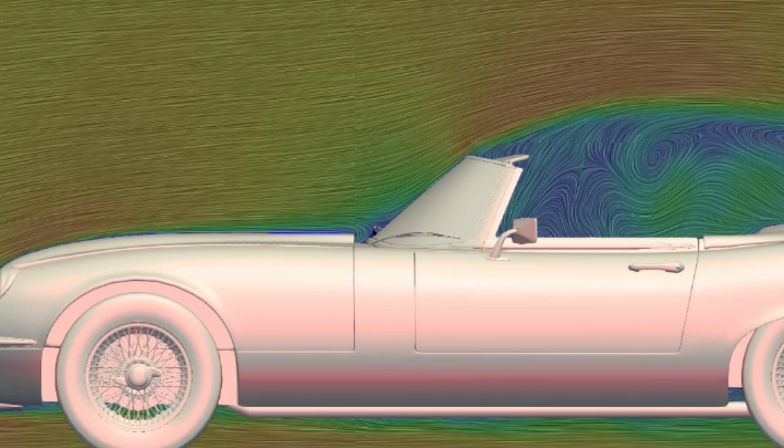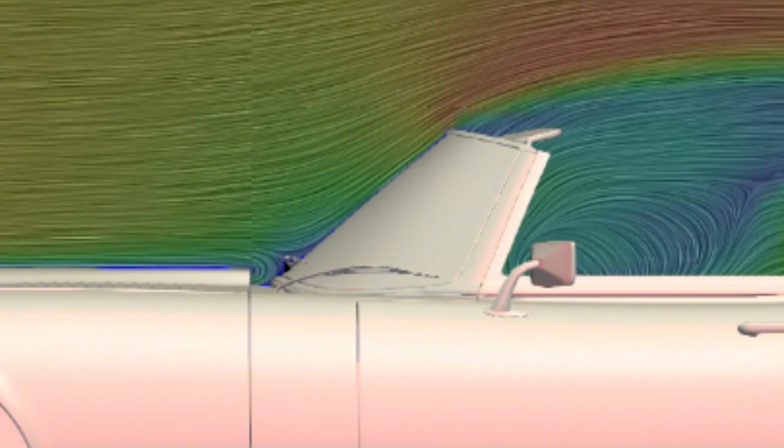You can see that as the flow meets the windshield, everything goes haywire. To begin with, the flow crashes into the windshield, and we can see that it becomes greener and bluer, which means it is decelerating. We'll see later how that affects the pressure.